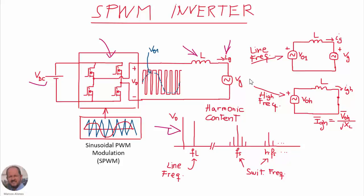Using the superposition principle, we study the circuit at line frequency — where both the inverter's first harmonic and the grid voltage source interact through the inductor to control the current — and at high frequency, where for each harmonic we have the inductor in series and the grid acts as a short circuit. This gives a simple expression for each harmonic amplitude, and the current is limited at high frequency due to the inductor impedance.